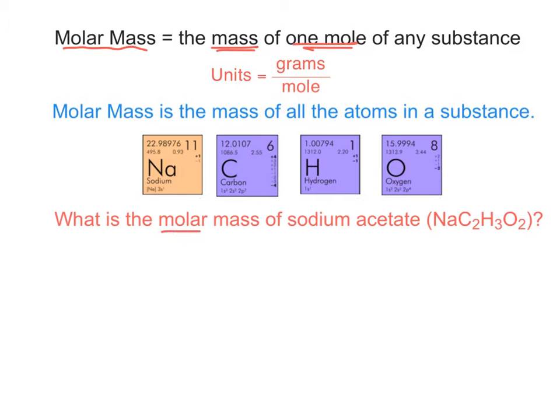So let's see if we can figure out the molar mass of sodium acetate. It's just the mass of all of the atoms in a substance. So this has one sodium. I look and I see that sodium weighs 22.99. We're going to round all of these off to a hundredth. Plus there's two carbons, so it's going to be 2 times 12.01.